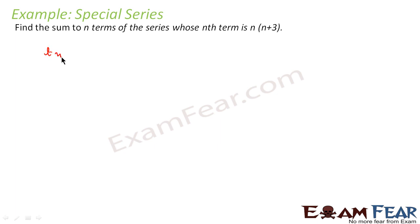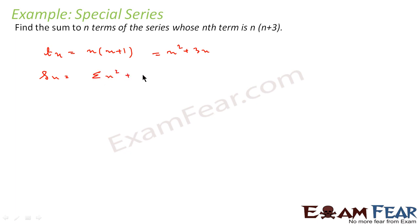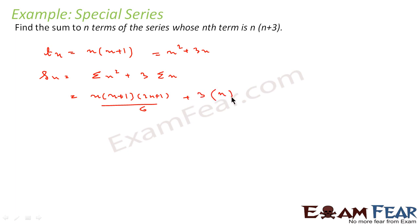We have been told that tn = n(n+1) = n² + n. Since tn equals this, Sn is nothing but Σn² + Σn. This is n(n+1)(2n+1)/6, the formula we have learned, plus n(n+1)/2. Very simple — we have used these standard summation formulas.